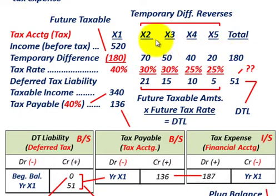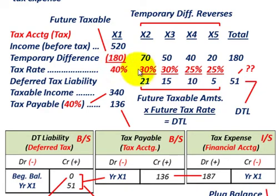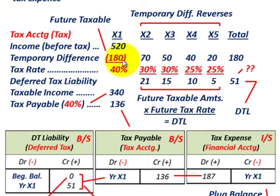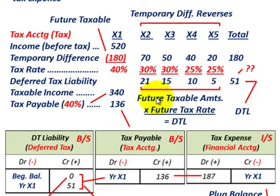Our total amount that we're going to be reversing over these next four years is $180,000. We have to come in and determine our deferred tax liability for this temporary difference, and that's going to be based on a changing tax rate that we project out in the future. For year X2 we're going to have a 30% tax rate, same for year X3 at 30%, and then year X4 and X5 at 25%. We started out with a 40% tax rate in year X1. The deferred tax liability is: future taxable amounts times the future tax rate.